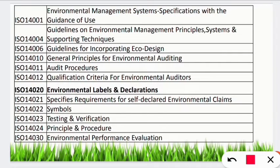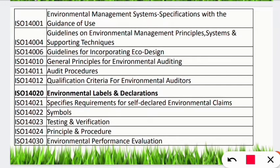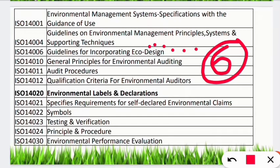Let's start. First, ISO 14006 provides guidelines for incorporating eco design. Eco design can be in architecture, marketing, furniture — anything which is environment friendly and sustainably managing the environment. Note that ISO 140 is common everywhere; only the last two digits change. For eco design, count the alphabets in 'DESIGN': D-E-S-I-G-N — that's six alphabets. That's why ISO 14006 is for eco design.